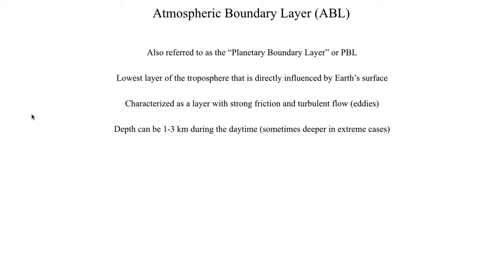During the daytime — and we'll talk about why this is the case a little bit later on — the depth of the boundary layer can be as deep as two to three kilometers. In more extreme cases, like in the height of summer and regions subjected to very intense sunlight, the depth can be even higher, up to four or even five kilometers. Usually, though, the depth of the atmospheric boundary layer will be around one kilometer, sometimes two to three kilometers, especially during the summer.